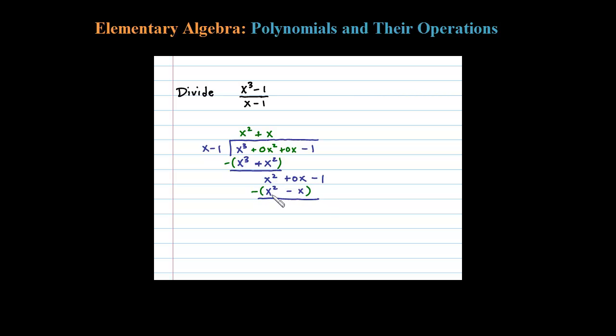Okay, so here when we subtract, x squared minus x squared is 0. Subtracting a negative is really the same thing as adding, so 0 plus 1x is 1x. And then bring down the minus 1.